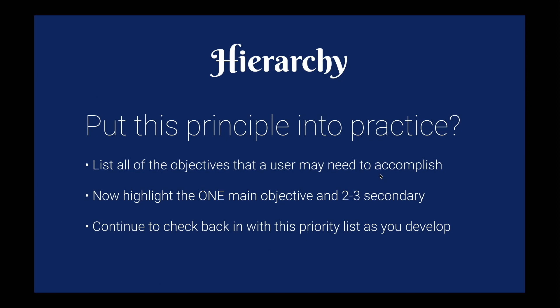So hierarchy — how do we put this principle into practice? Before starting a new project, screen, or feature, list out all the objectives a user might need to accomplish. You're probably familiar with use cases, but make sure those are written from a very human point of view. You'll likely have a long list, so highlight the number one priority and a couple of secondaries. Then check in as you're developing to make sure you're meeting those.